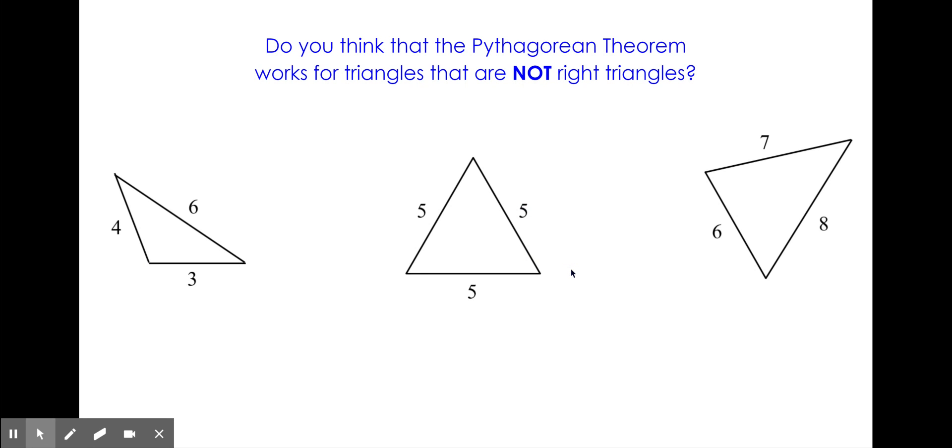Do you think that the Pythagorean theorem works for triangles that are not right triangles? Pause the video and see if A squared plus B squared equals C squared in any of these three examples.